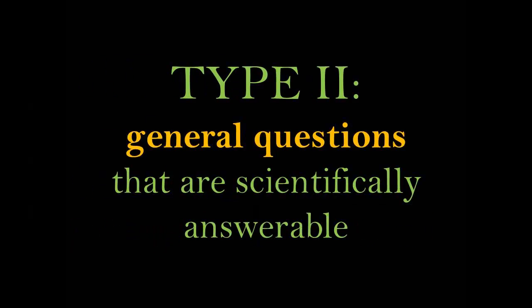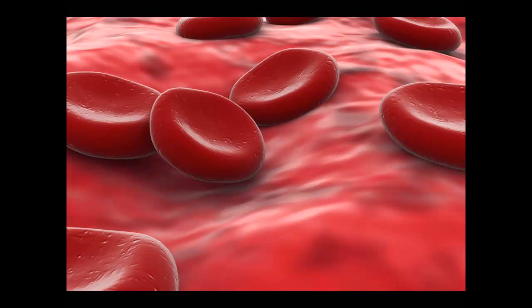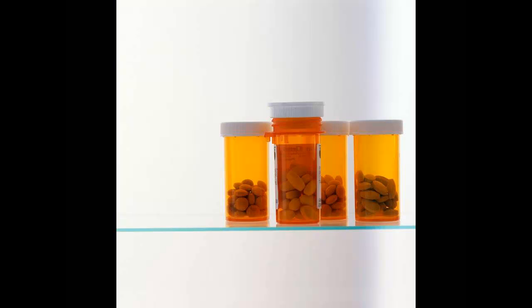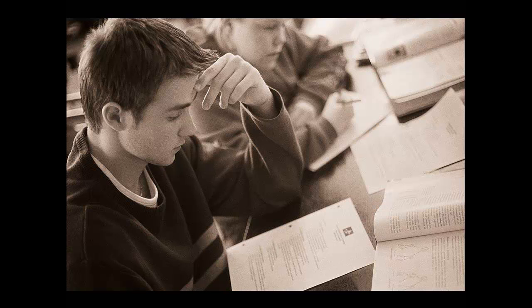Type 2 questions are general health questions that can be answered scientifically. These are also called background questions, and you will come across them quite often in both your academic career and in clinical practice. For example: What are the most common treatments for hemochromatosis, or too much iron in the blood? What are the potential side effects of oral prednisone, a steroid? How is autism diagnosed? What are the symptoms of hypoglycemia, or low blood sugar? This type of question can generally be answered through a medical textbook or other medical reference sources like UpToDate.